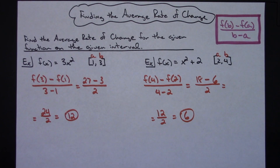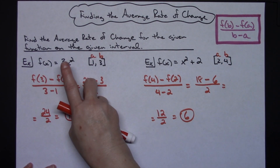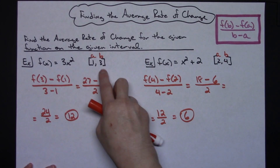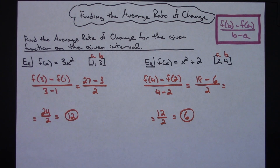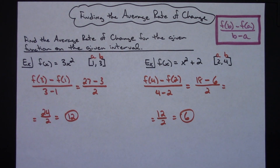So two very straightforward examples of just using the average rate of change formula when given a function and an interval. Thanks for watching — if the videos are helpful, don't forget to subscribe to the channel, hit the bell notification, and share with your friends so they can benefit too.